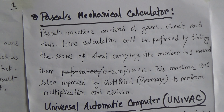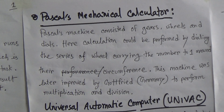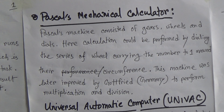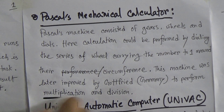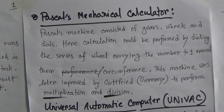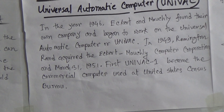Next, in the history, we will know about Pascal's mechanical calculator. This machine consisted of gears, wheels, and dials. Calculations could be performed by dialing a series of wheels carrying numbers around their circumference. This machine was later improved by Godfrey from Germany to perform multiplication and division. So Pascal's mechanical calculator is used for multiplication and division.